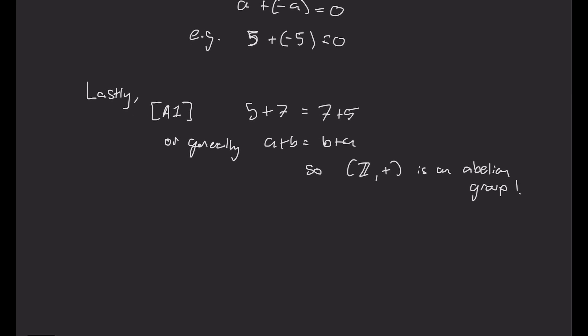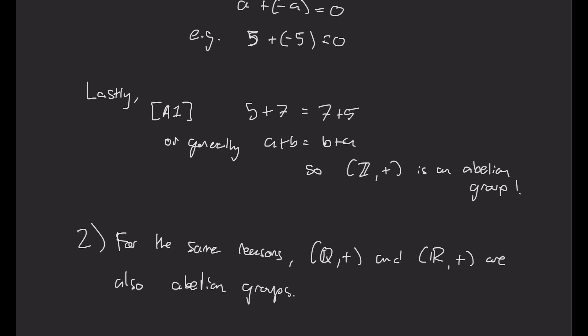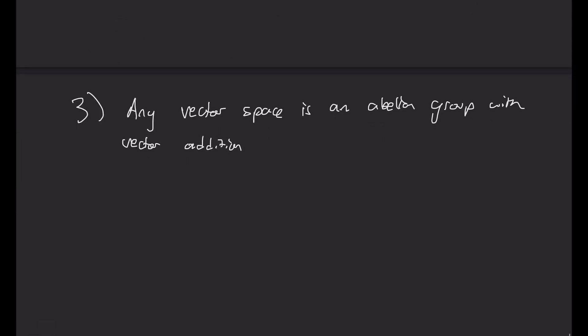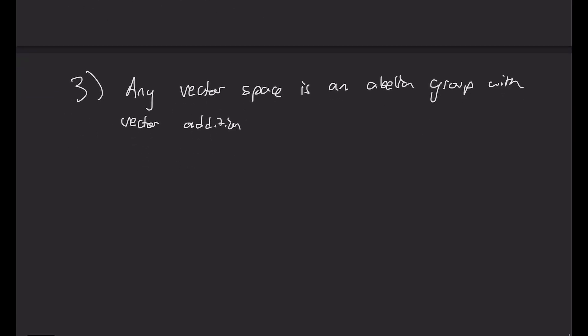So notice that the addition works the same way in the rational numbers or the real numbers. So you can go through these properties, and maybe we could have started with the real numbers. But Q, which is a set of rational numbers, and R, which is a set of real numbers with addition, are also abelian groups for the same logic, same stuff that we've just done. And if you're familiar with vector spaces or linear algebra, any vector space, if you've looked at the abstract definition of a vector space, you'll notice that the first few properties are exactly saying that any vector space with vector addition is an abelian group.